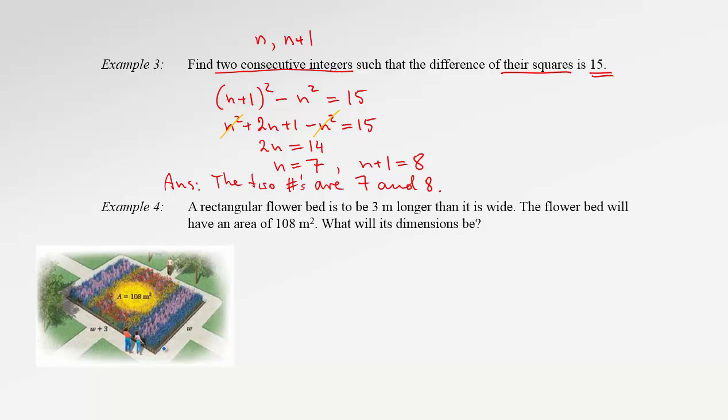Dimensions means the length and width. If we look at this picture, the width is already labeled by W. And the length, let's label it by L, is actually W plus 3 because of the information that the flower bed is 3 meters longer than it is wide.